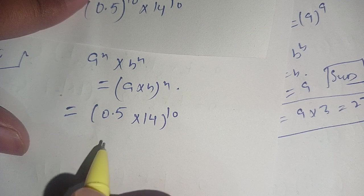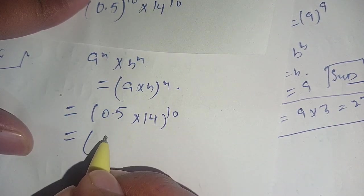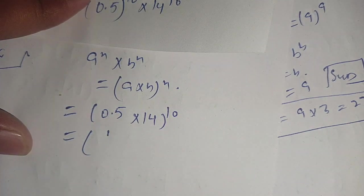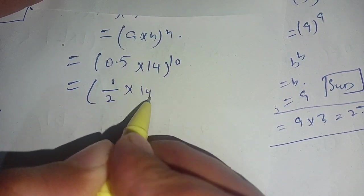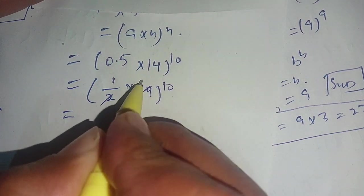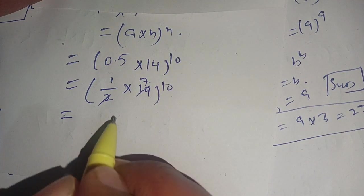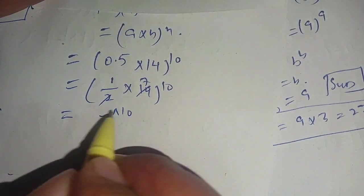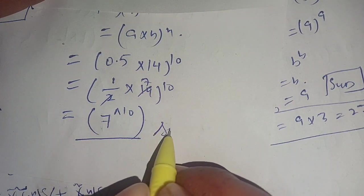For more simplification, we can write 0.5 as 1 divided by 2, times 14, whole power 10. Now 2 times 7 becomes 14, and 1 times 7 becomes 7. So this is equal to 7 power 10, which is our required answer. Make sure to subscribe to our channel for more informative videos — see you in the next video!